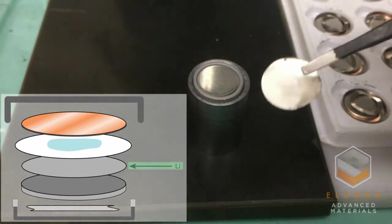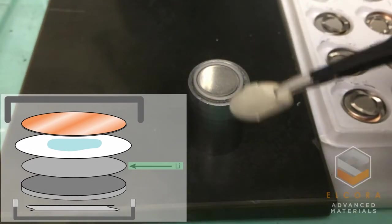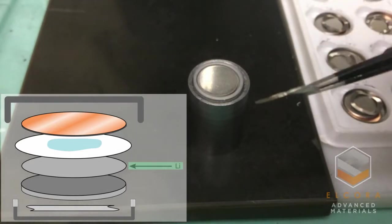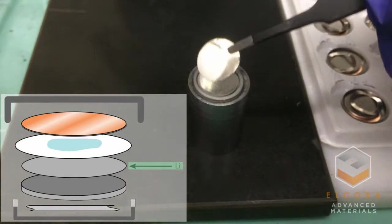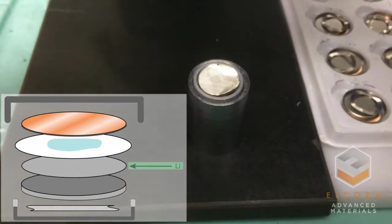In an anode half cell, a thin disk of metallic lithium acts as the cathode. It supplies the anode with plenty of lithium ions so that we can get a clear picture of how the anode is performing.